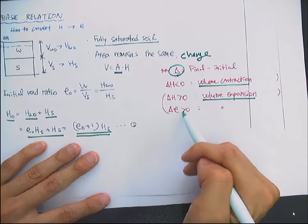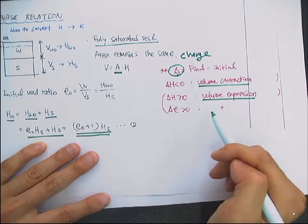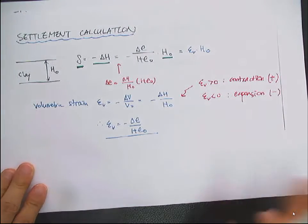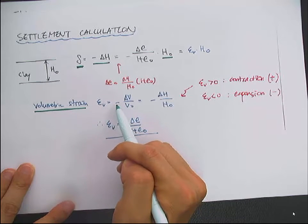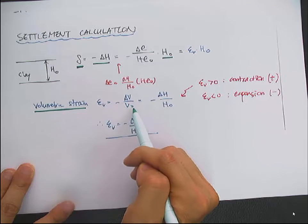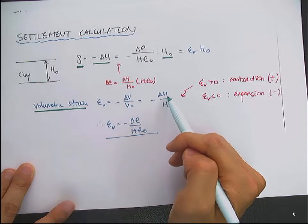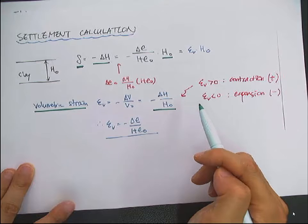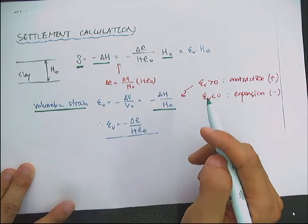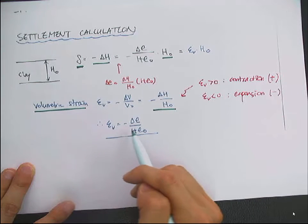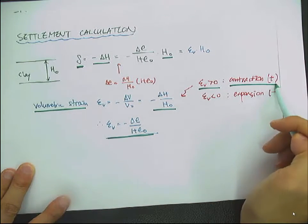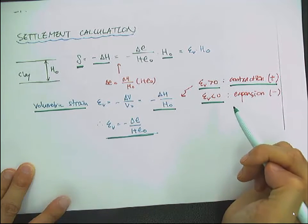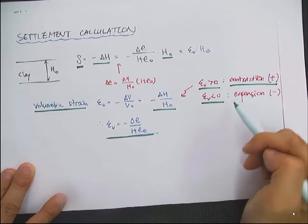If delta e is larger than zero, it also means volume expansion. We can also define the volumetric strain epsilon V. Epsilon V is defined as the negative change in volume over the initial volume. So negative delta H over H-naught will be the volumetric strain for the one-dimensional consolidation test. Epsilon V equals minus delta e over (1 + e-naught). If epsilon V is a positive value, it means contraction; if epsilon V is negative, it means volume expansion occurred.